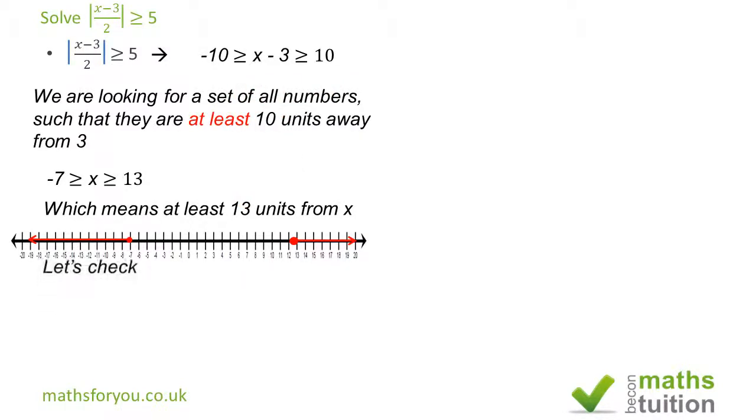Now, let's check. Suppose we pick a number from the right-hand side, pick the number 17. Now, 17 minus 3 is 14. Divide 14 by 2, we get 7. So 7 is greater than or equal to 5. So numbers on this side are valid.